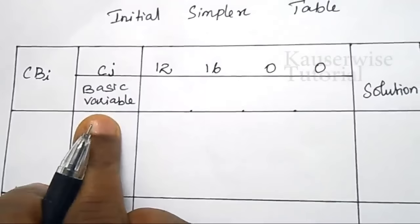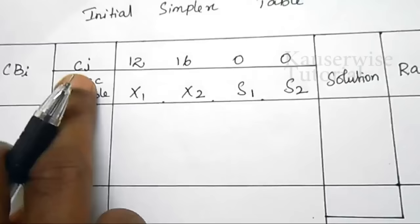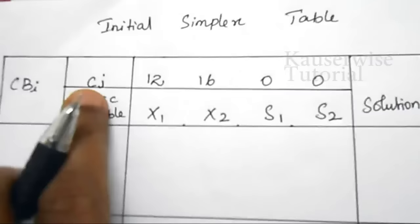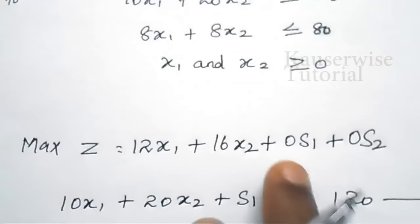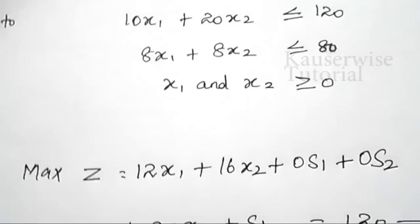We have four variables: x1, x2, s1, and s2. cj values are 12 for x1, 16 for x2, 0 for s1, and 0 for s2. In the objective function, 12 is the coefficient for x1, 16 is the coefficient for x2, and the coefficients for s1 and s2 are both 0.